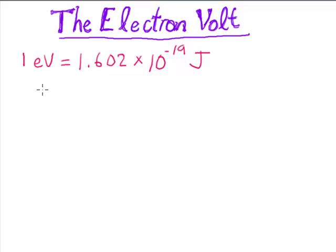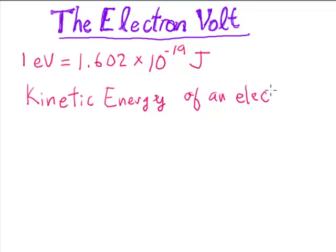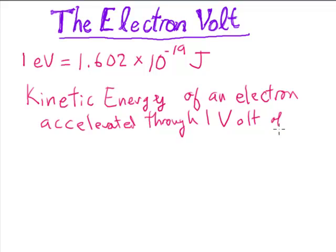So one idea behind the electron volt: one electron volt is the amount of kinetic energy that an electron would have if it was accelerated by one volt of electrical potential. So the kinetic energy of an electron that's been accelerated through one volt of electrical potential.